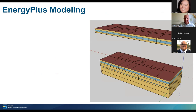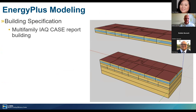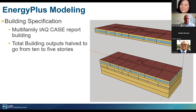So the specification of the building was the multifamily IAQ case report building — the infamous brown and yellow prototype buildings you see used all the time for code compliance analyses in California.